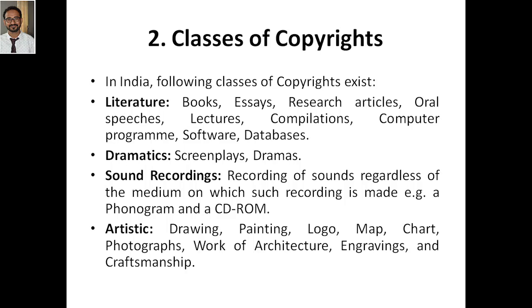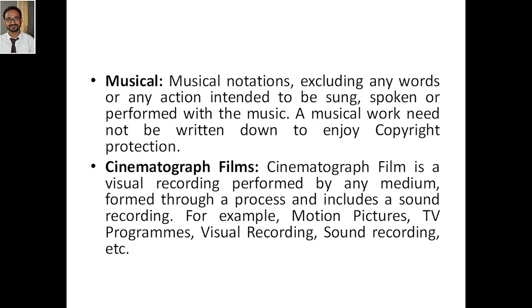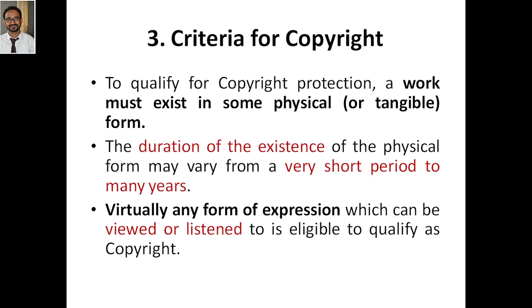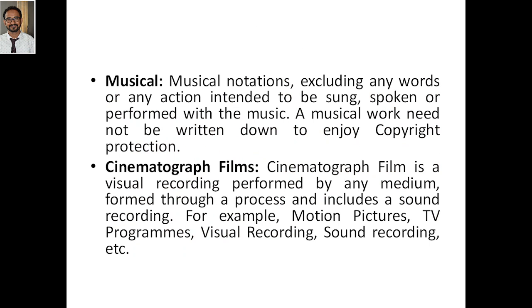So in summary, the different categories or classes of copyrights are: literary, dramatic, sound recording, artistic, musical, and cinematograph films. Based on which class your work falls into, you can apply for the appropriate copyright. In the next class, we will discuss the criteria — the requirements to obtain a copyright.